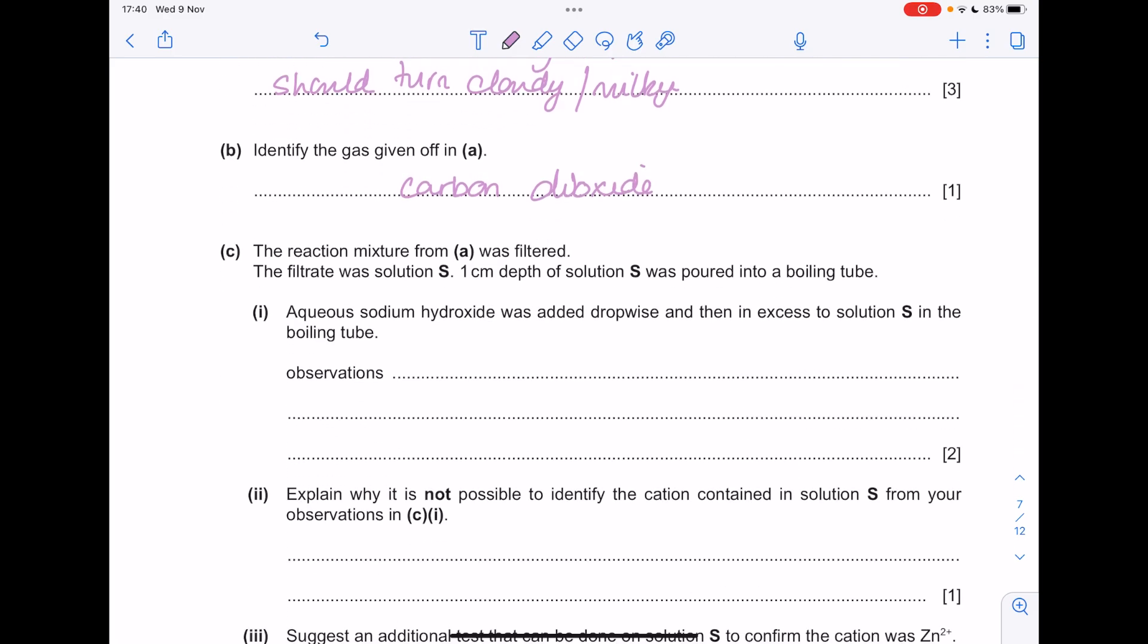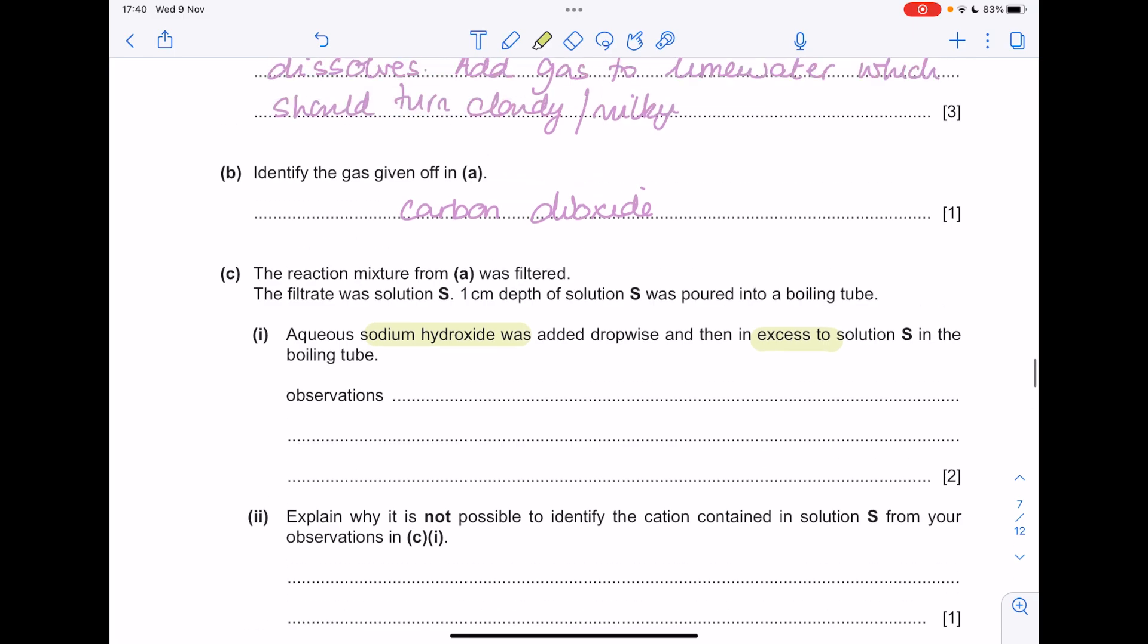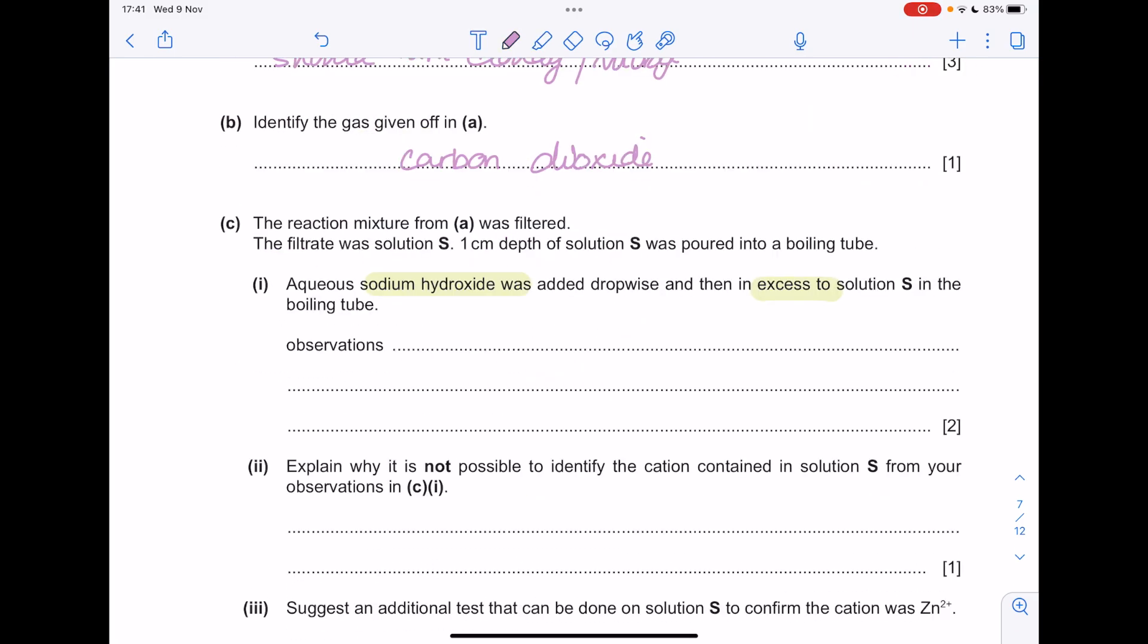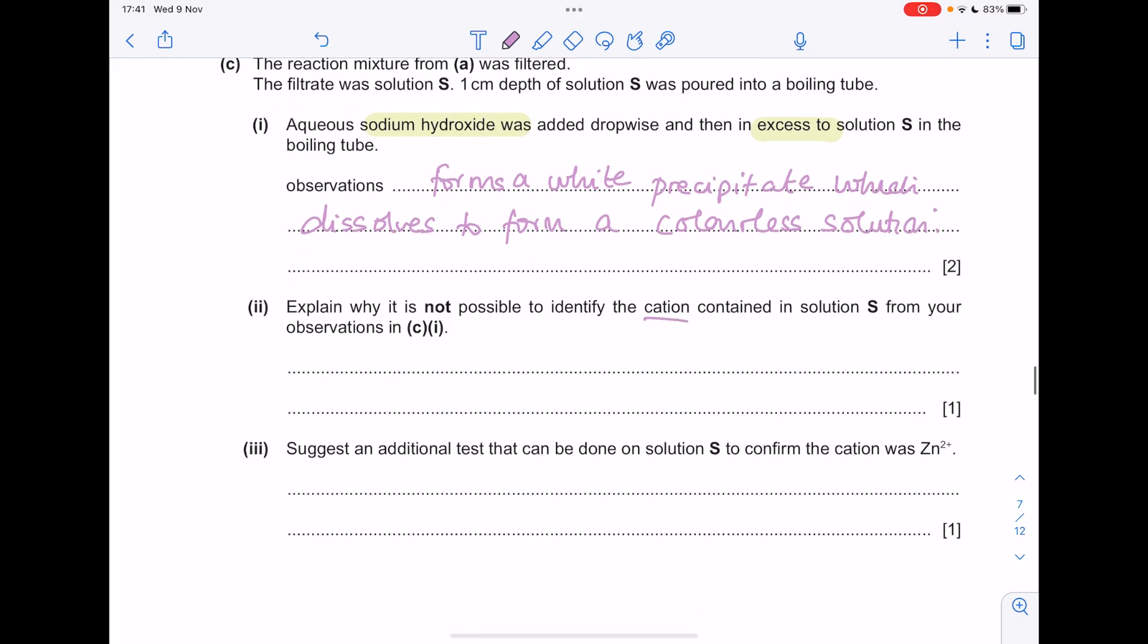The reaction mixture from A was filtered. The filtrate was a solution S. One centimetre's depth of solution S was poured into a boiling tube. Aqueous sodium hydroxide was added dropwise. And then in excess to the boiling tube, what were the observations? What does the Zn2+ do when it's reacted with sodium hydroxide? Well, it forms a white precipitate. Which should dissolve with excess sodium hydroxide and form a colourless solution.